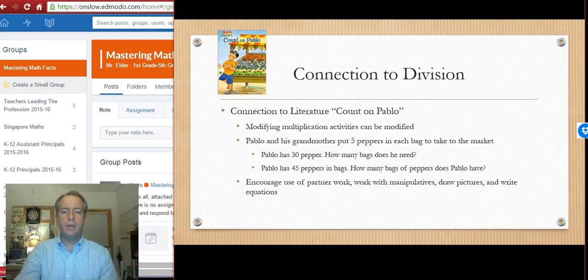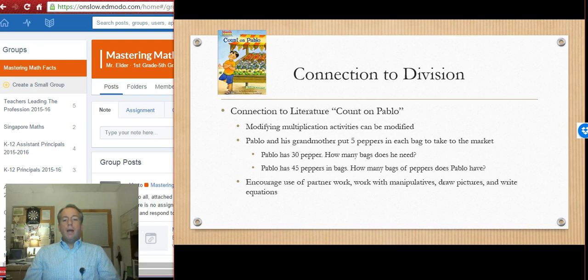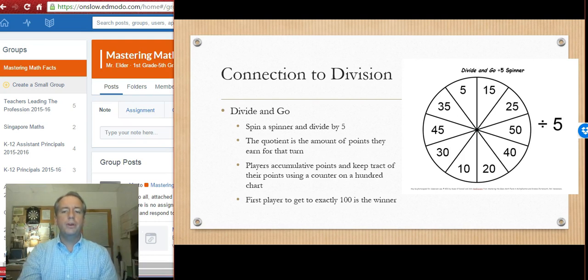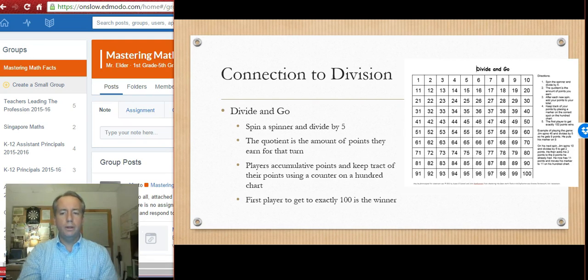As we get close to the end here, we always want to come back to division. We don't want to forget the partner to multiplication and that being division. Any of the activities that we've done with multiplication can easily be modified to make work for division. So some examples are, Pablo and his grandmother put five peppers in each bag. We know that scenario from the story. Pablo has 30 peppers. How many bags does he need? He has 45 peppers in the bag. How many bags of peppers? Lots of partner work, lots of manipulative work. When kids start to realize that if I drew the array to multiply, that same array is what I'm going to see when I divide. The rows and the columns, they're the same. It's just whether I'm talking about the dots in the middle or am I talking about how many rows and how many columns. That can be a real freeing moment for kids.